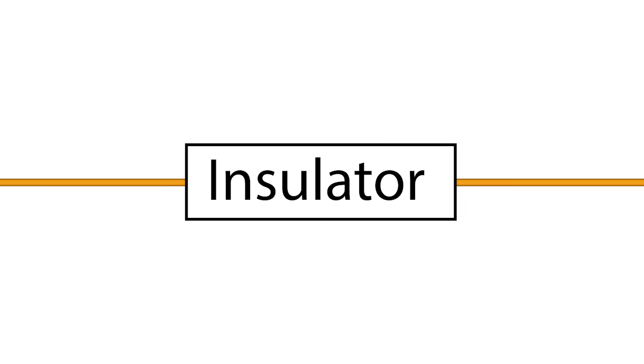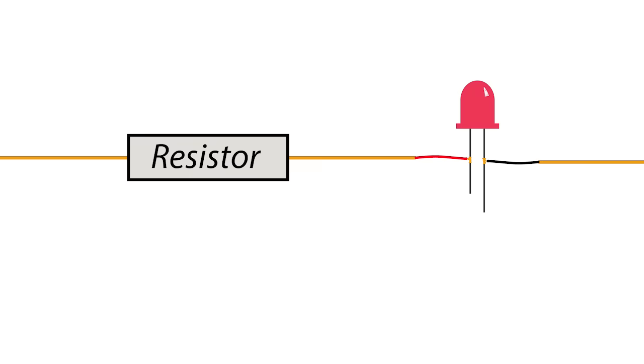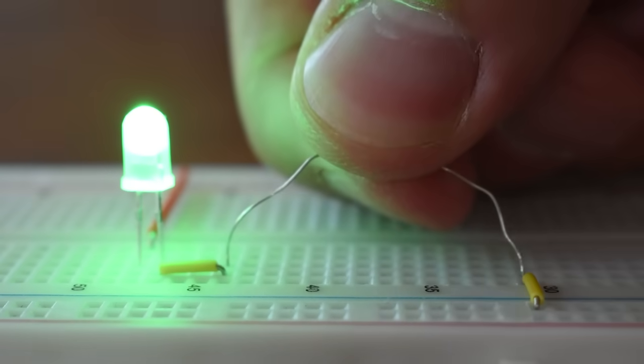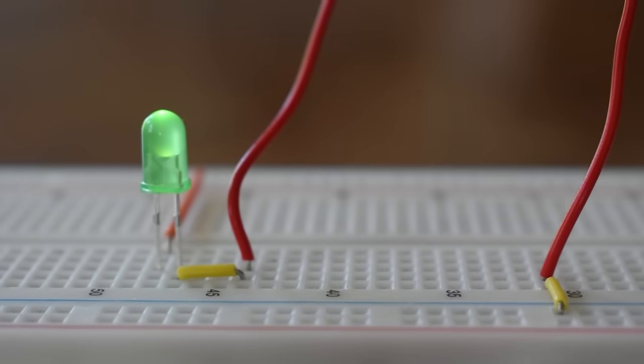If you take an insulator and adjust the properties so it's a little less restrictive and allows some electrons to flow through it, it becomes a resistor. The purpose of a resistor is to lower the voltage in a circuit for a component downstream so it's not damaged by high voltage. Like this resistor for my LED. If I remove the resistor from the circuit, the voltage will be too high and destroy the LED.